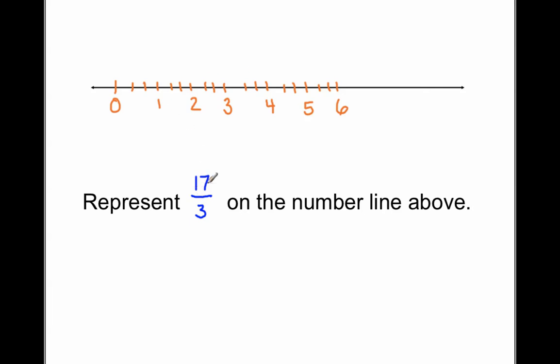All right, we're going to the 17th third. I know that each one of these tick marks is one third. I know that every whole is three thirds. Let me just count in terms of the multiples of three to save myself some time. Three, six, nine, twelve, fifteen, eighteen. Eighteen is too much, so somewhere between here, fifteen, sixteen, seventeen. There's 17 fifths.